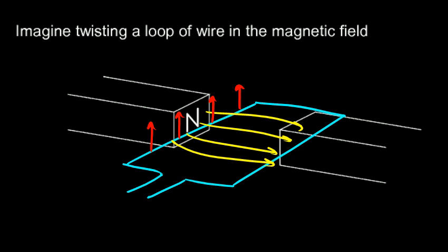And as a result of that, we get current flow in the wire in one direction. And the other part of the wire is being forced down in the magnetic field, and as a result of that we get current flow in the wire in the opposite direction like that.